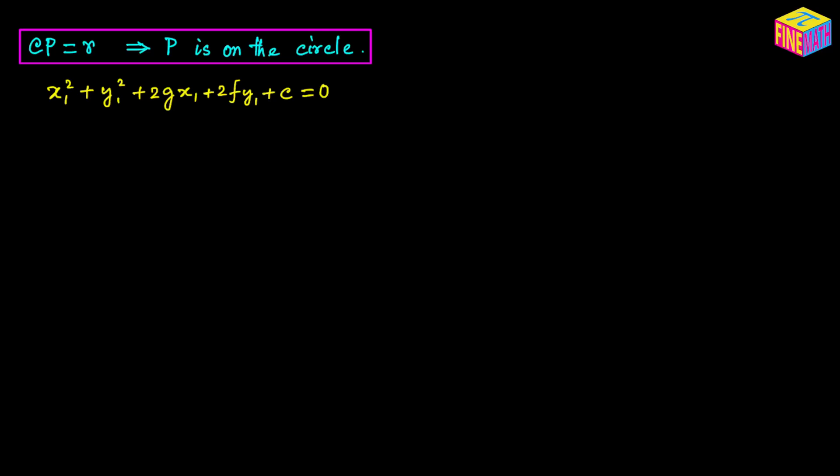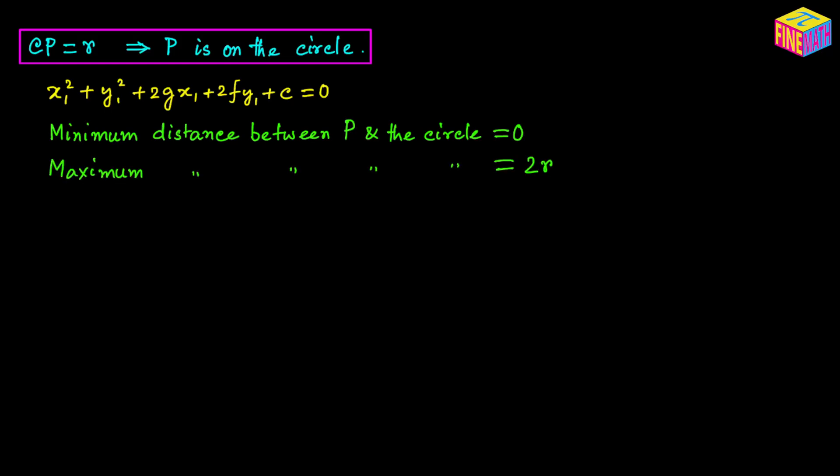When P is on the circle, the minimum distance between P and the circle is 0 — obviously, since P is on the circle. The maximum distance is the distance across the diameter on the other side, which equals 2R. We already know the radius from the given equation of the circle, so the maximum distance is simply 2R.